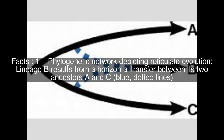Phylogenetic network depicting reticulate evolution: lineage B results from a horizontal transfer between its two ancestors A and C, shown with blue dotted lines.